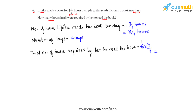2 twos are 4, 2 threes are 6. We multiply and get the product as 21/2, which is an improper fraction. Dividing 21 by 2 we get the quotient as 10 and remainder 1. So 10½ hours is the total number of hours that she required to read the entire book. And this is how to solve this question.